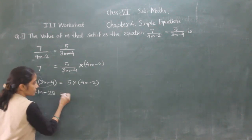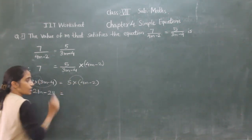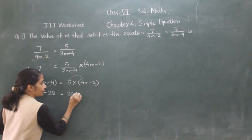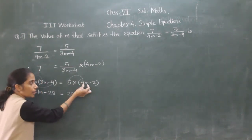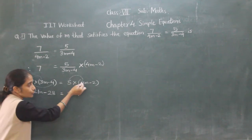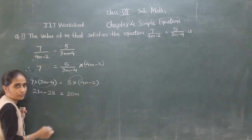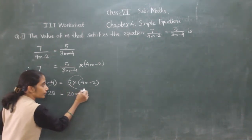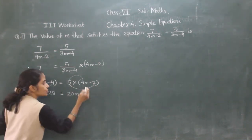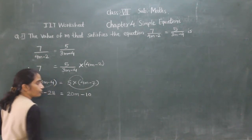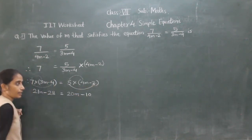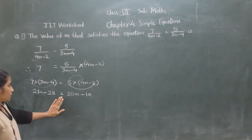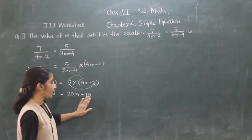Is equal to — here also: 5 fours are 20, so 20n. 5 multiplied by 4n — 5 fours are 10... So 21n minus 28 is equal to 20n minus 10.